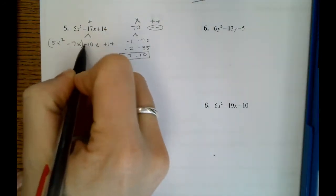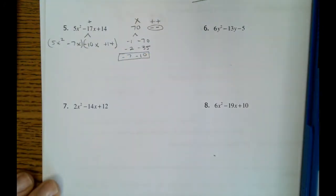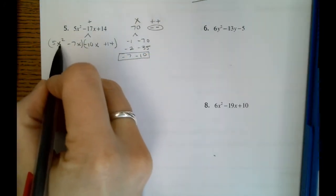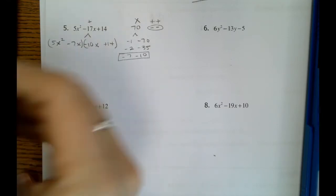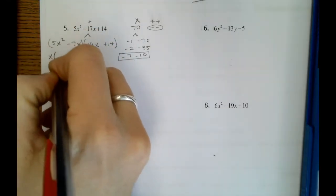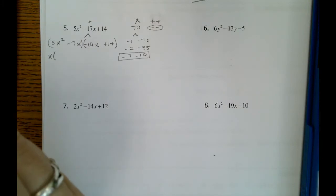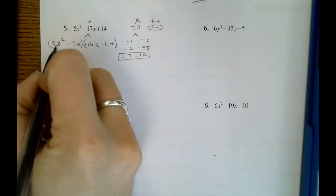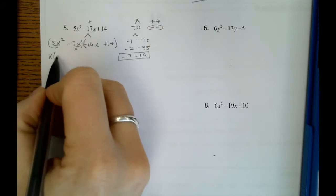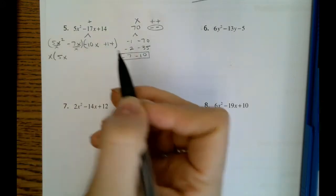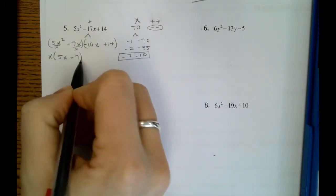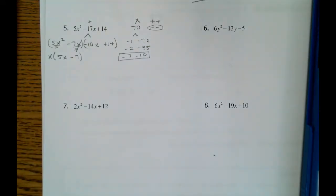We'll do our fancy grouping method. So between 5x squared and negative 7x, the only thing that we can factor out is an x. So here we're dividing by x on both sides. So we'll be left with 5x there and a negative 7 here. Those two x's will cancel out.